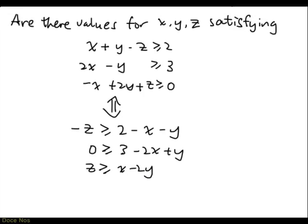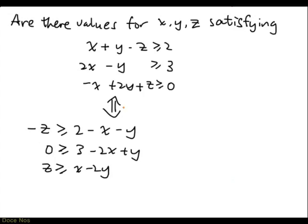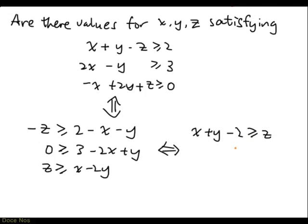Now, the first inequality has minus z. If we want to write it as z, we have to change the sense of the inequality. So this becomes x plus y minus 2 greater than or equal to z. And we have 0 greater than or equal to 3 minus 2x plus y, and z greater than or equal to x minus 2y.